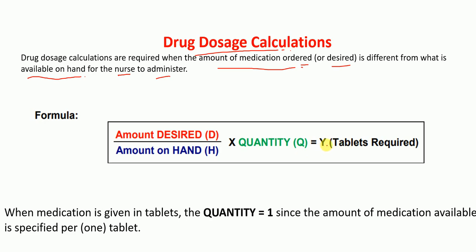This gives us the number of tablets or capsules required. When the medication is given in tablets, the quantity Q equals 1, since the amount of medication available is specified per tablet. So remember the formula: amount desired (D) divided by amount on hand (H), times quantity (Q), gives us the number of tablets.